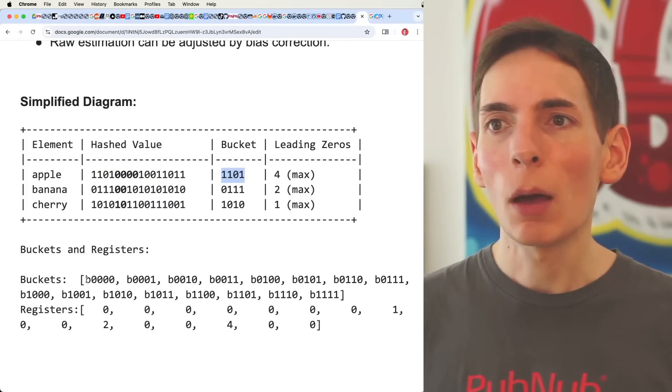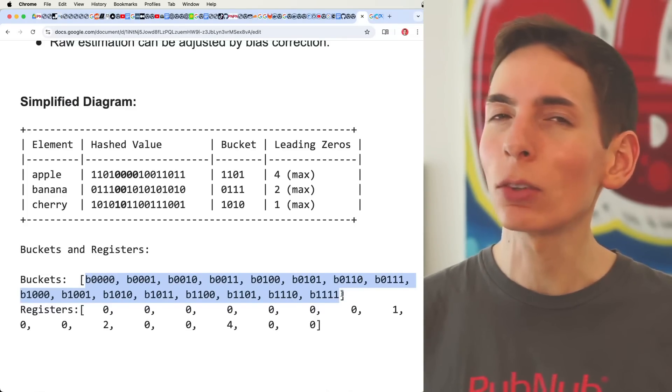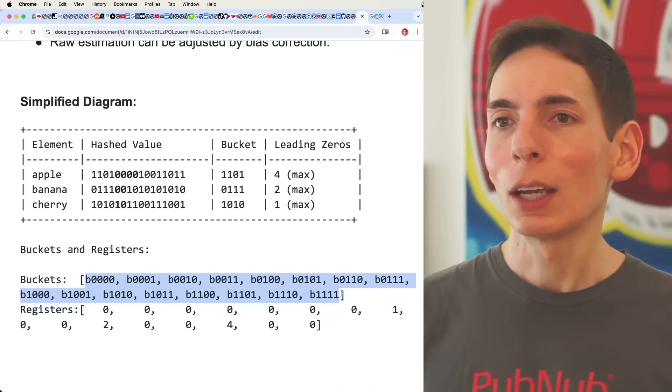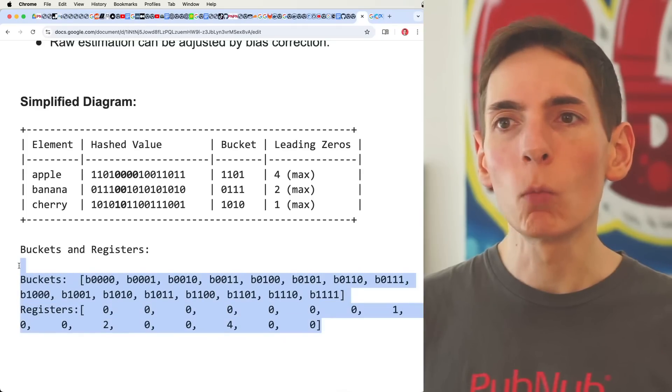Then we count the first four elements here in the binary string as what bucket that goes into. And then you can see here a mapping of that bucket. Now of course, our buckets is just an array, it's an array of integers. And that's what we're looking at.